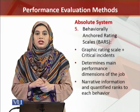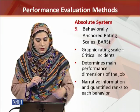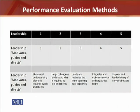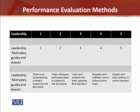Let's see a demonstration of how BARS works. This is a grid, and like our graphic rating scale, if you look at the top there is a mention of 1, 2, 3, 4, 5 — a Likert scale. The first column mentions leadership traits: Motivates, Guides, and Directs. So a leader's traits or behaviors are listed in the first column.